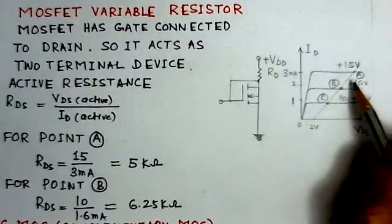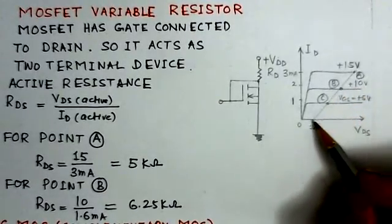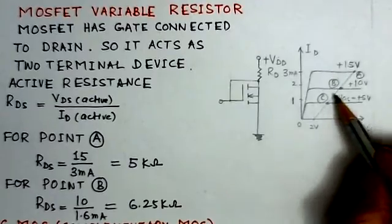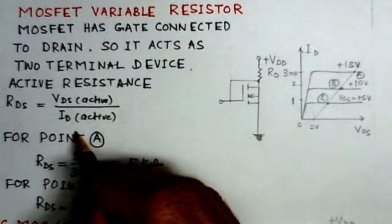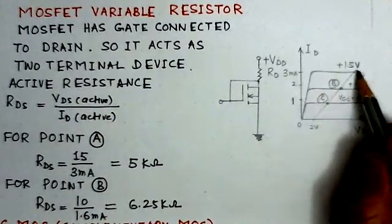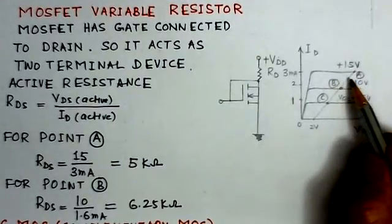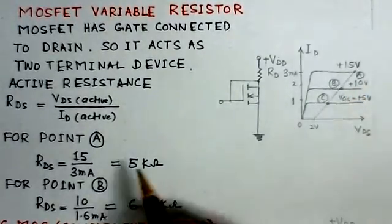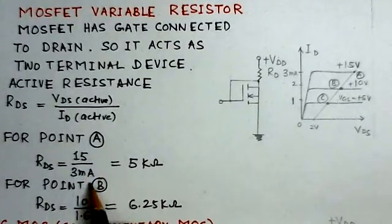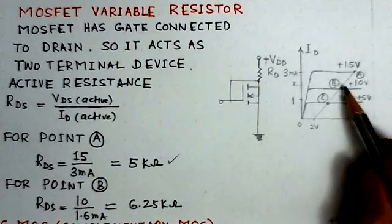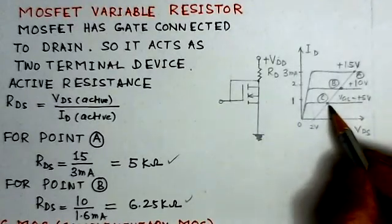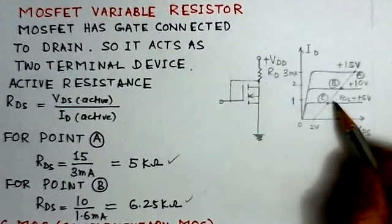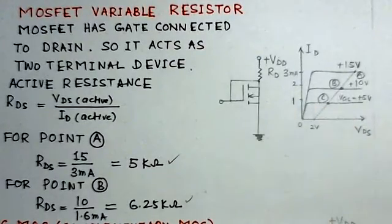And then you can really find out the resistance at different points. So this RDS drain resistance is given of VDS active over ID active. So this region is said to be the saturation region or also said to be the active region. So this resistance is given here. For point A we have calculated here RDS is 15 by 3 milliampere, that is 5 kilo ohms. Similarly for point B you can calculate 6.10 over 0.96 milliampere, 6.25 kilo ohms. Similarly for C also it will be calculated.